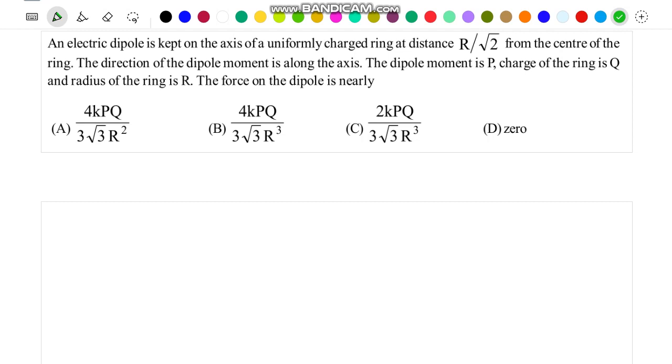Hello friends, in this problem there is an electric dipole which is kept on the axis of a uniformly charged ring at a distance of r by root 2 from the center of the ring. The direction of the dipole moment is directed along the axis of the ring.